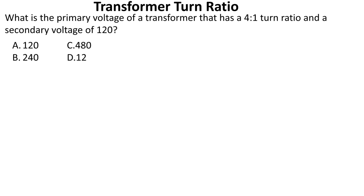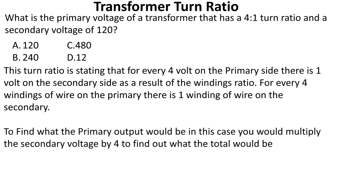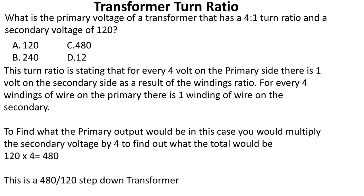Let's do one more to show you that you can use this relationship back and forth whether you know the primary or the secondary. What is the primary voltage of a transformer that has a four-to-one turn ratio and a secondary voltage of 120? For every four volts on the primary there is one volt on the secondary. Multiply the secondary voltage by four: 120 multiplied by four equals 480. This is a 480/120 step-down transformer and we select C.